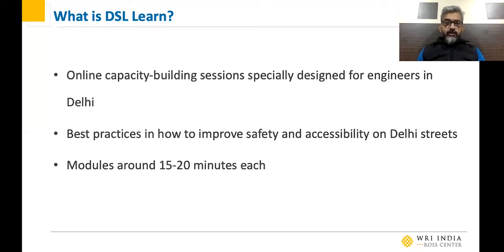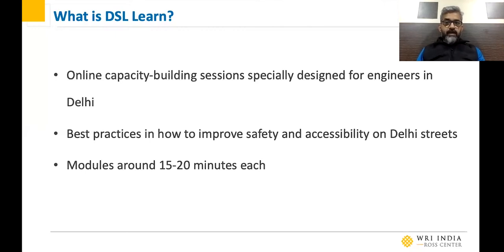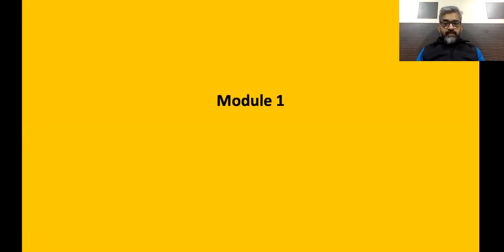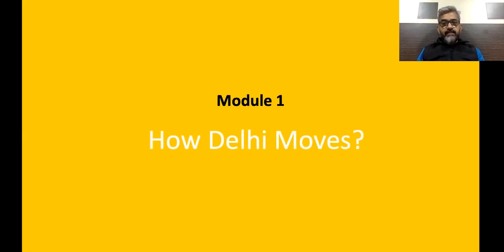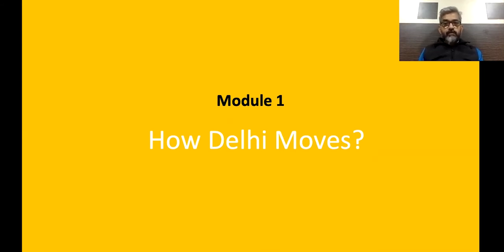It's going to be very short and crisp. In this session we'll be talking more about the principles around safety and accessibility when it comes to road transportation in general, but more specifically when it comes to roads and streets in our cities. This is the first module and it's specifically going to talk about how Delhi moves — looking at two ends of the spectrum: what is our perception, and what does the data say about mobility in Delhi.